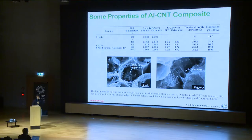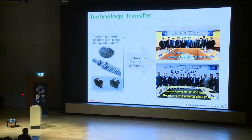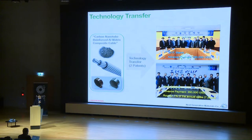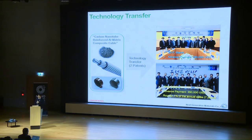This can be used as a reinforcing material for metal matrix composites. Based on this technology, my company recently sold a license for this patent for making carbon nanotube-reinforced aluminum matrix composite cables — at $500,000 USD plus a one percent royalty for seven years. It was transferred to a Korean company last October.